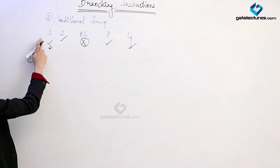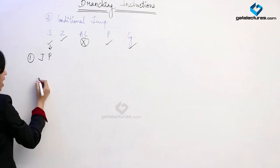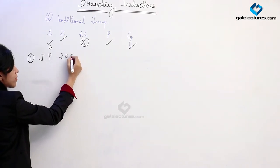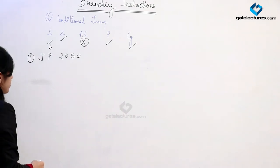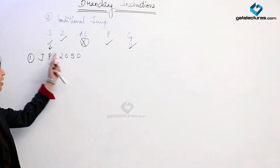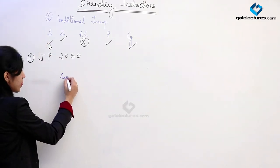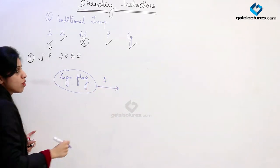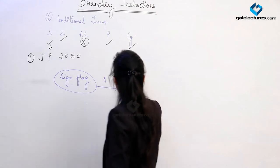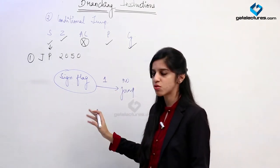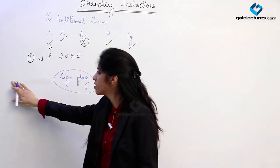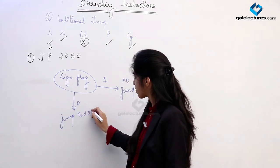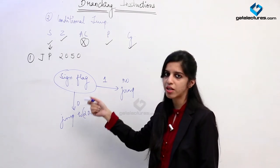For the sign flag, we are having two instructions: jump on plus and jump on minus. For jump on plus — instruction JP — suppose we give JP 2050. What happens is we check the sign flag. If the sign flag is 1, meaning a negative number, we are not going to jump; simply the next instruction is executed. But if the sign flag is 0, meaning the result is positive, then we jump to 2050. Similarly for JM — jump on minus — if the sign flag is 1 (result is negative), we jump to the given memory location.